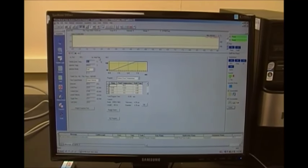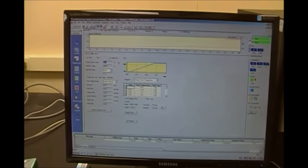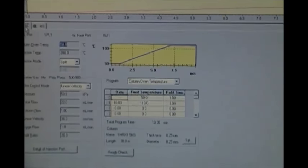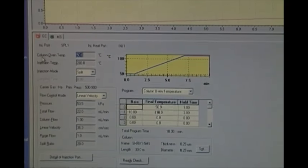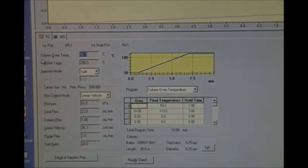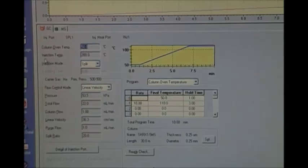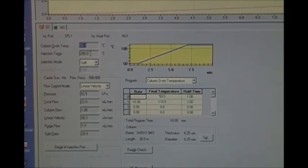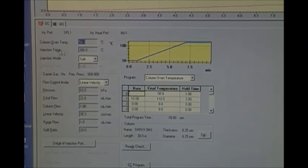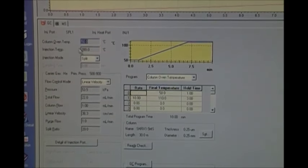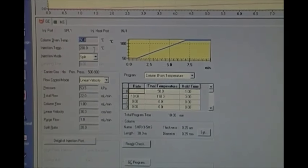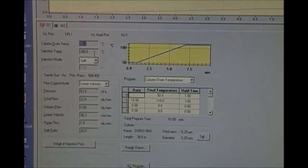So we're here at our method detail. This is our method detail for GC. A couple of important things: our oven temperature, which is also the temperature of our column, is set to 50 degrees Celsius. And then our injection temperature, which is 280 Celsius. Now our injection temp is 280, which is also the same temperature as our GCs in the lab.